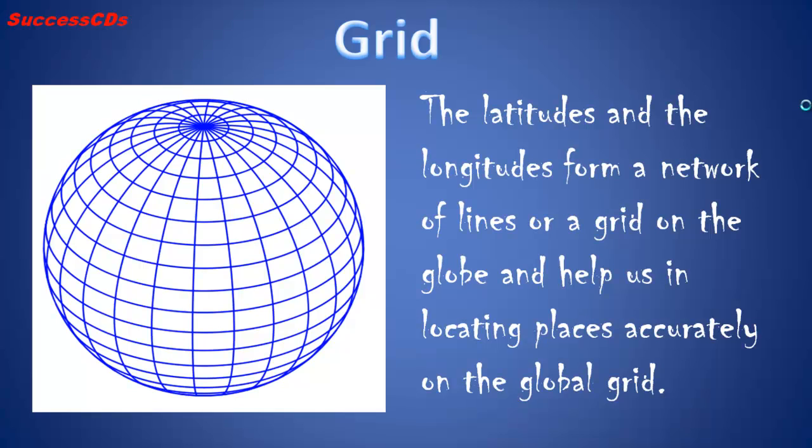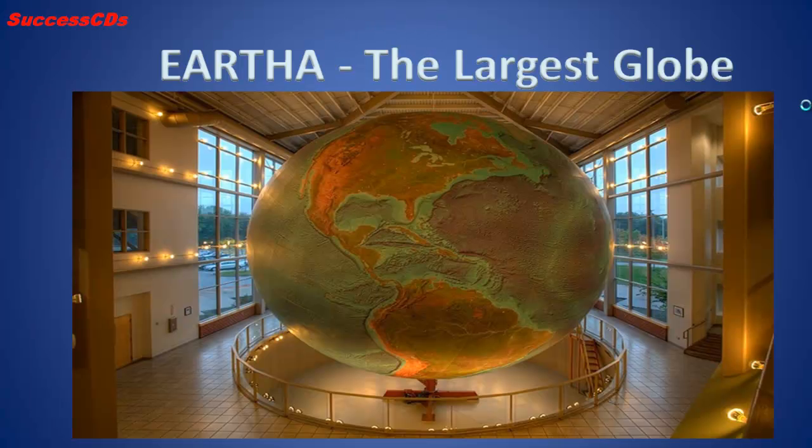The latitudes and the longitudes form a network of lines or a grid on the globe and help us in locating places accurately on the global grid.